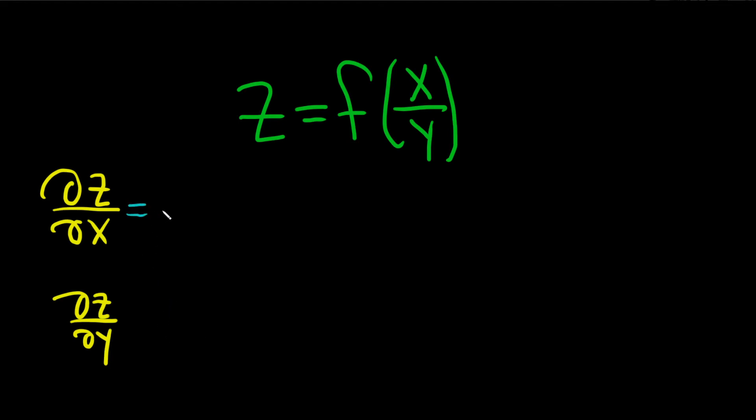So we're going to use the chain rule. Basically we have an outside function, that's f, and we have this inside function x over y. So to do this first part with respect to x, I'm going to think of it like this.